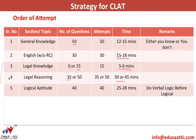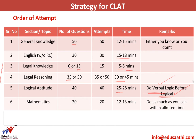Once done with English and the legal part, move to the logical aptitude — the reasoning section — and finish it in approximately 25 to 28 minutes. Do not spend a lot of time on a single question; leave it if you cannot solve it on the first attempt. Within this section, do verbal logic before logical reasoning, as it saves time and improves accuracy.